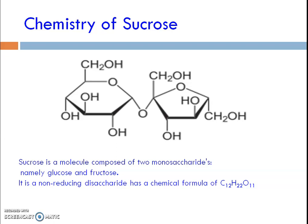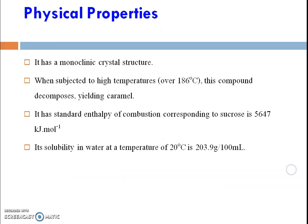Coming to the chemistry of sucrose — the chemical structure of sucrose is given here. If you observe the structure, it contains two monosaccharide units, mainly glucose and fructose. It is a non-reducing sugar and has a chemical formula C12H22O11.